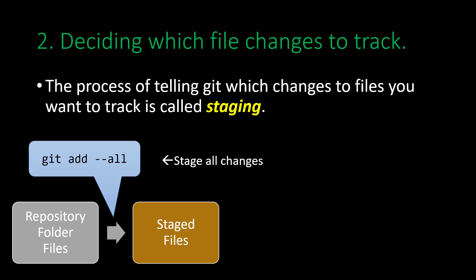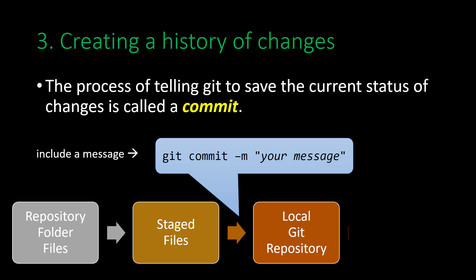The next concept you need to understand is that Git allows you to decide which changes it should track. This is a concept called staging. The behavior is different from other version control systems and doesn't have much value in our simple scenario. We will want to track all of our changes, so we will type git add --all to stage all of our changes. After the files are staged, we should commit them. This creates a history of changes by telling Git to record the current status of the working directory.